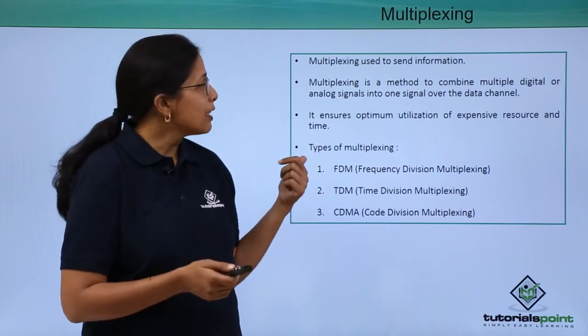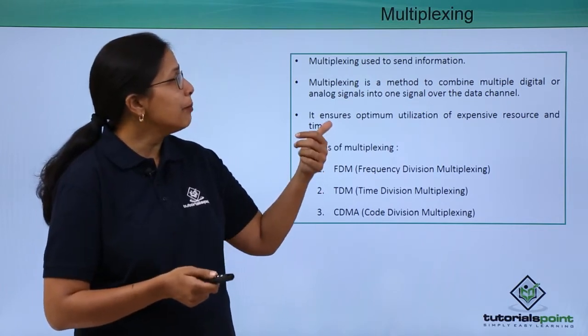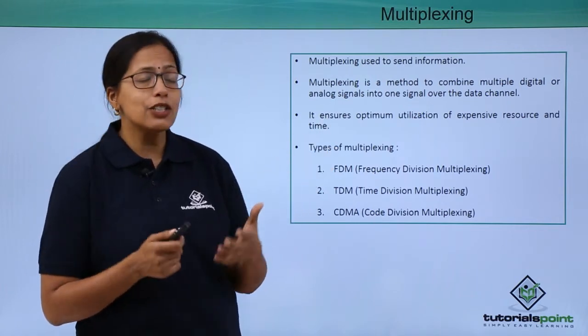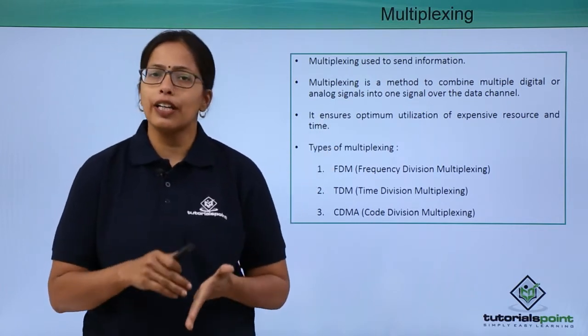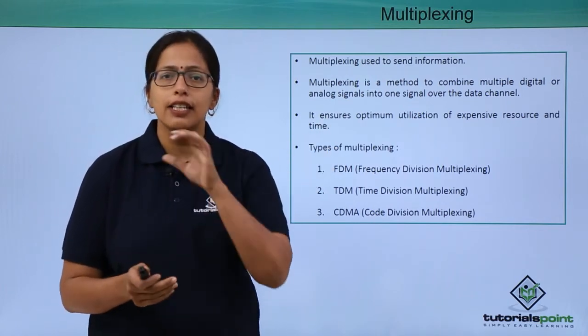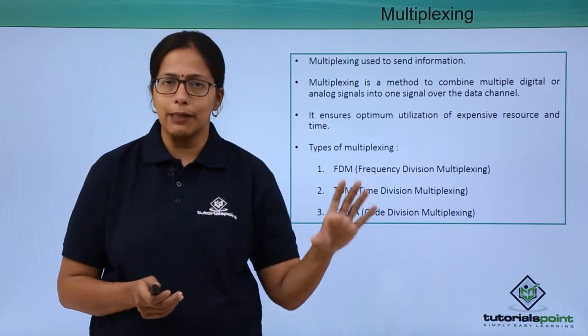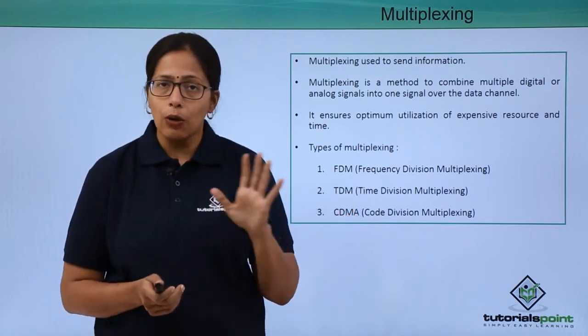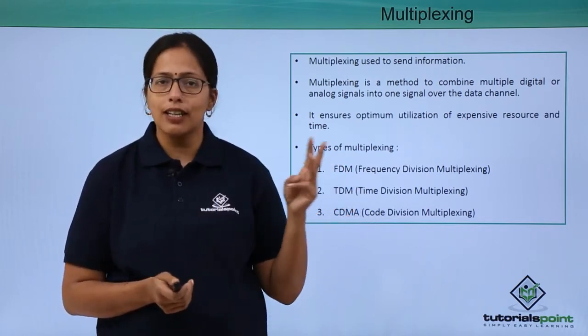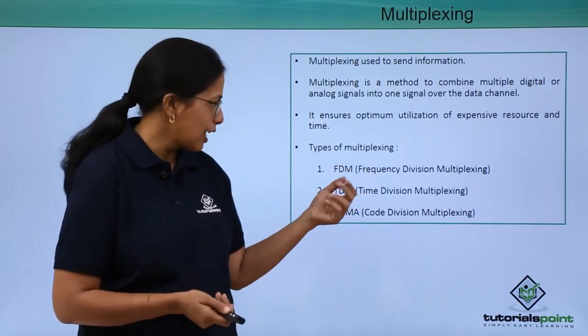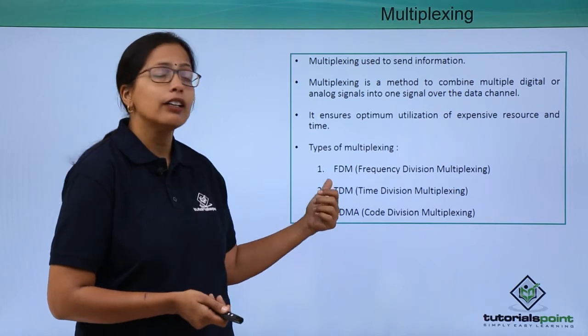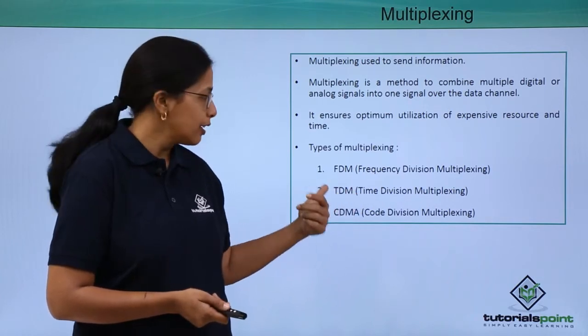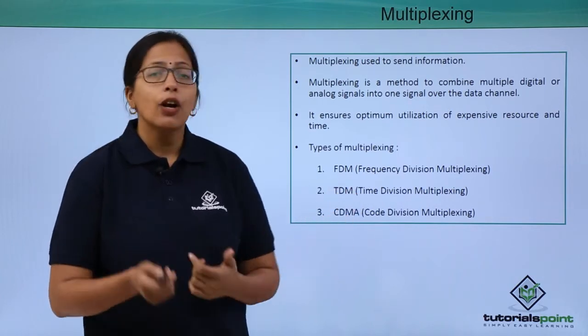So now, what is multiplexing? Multiplexing means combining multiple digital or analog signals at the same time. It is done in three ways, as you can see here: FDM, TDM, and CDM.